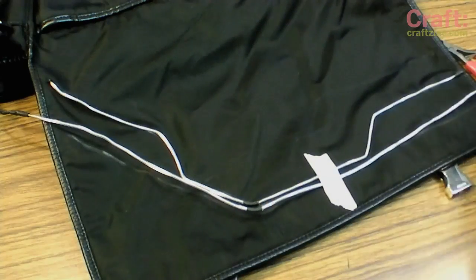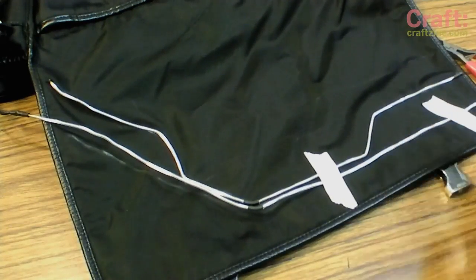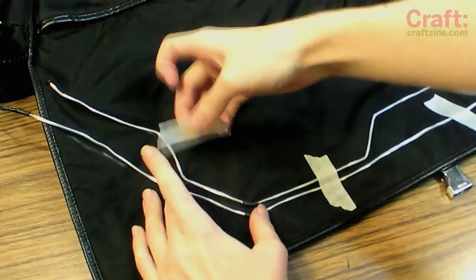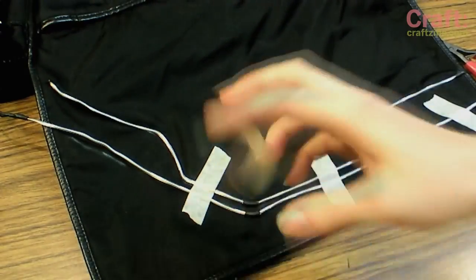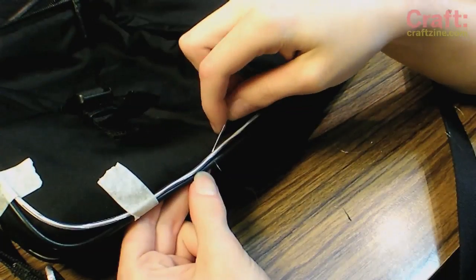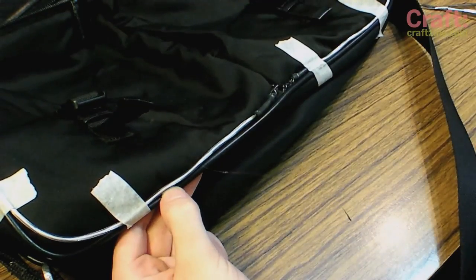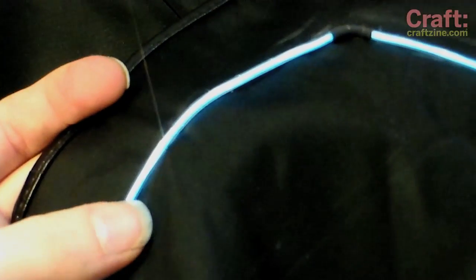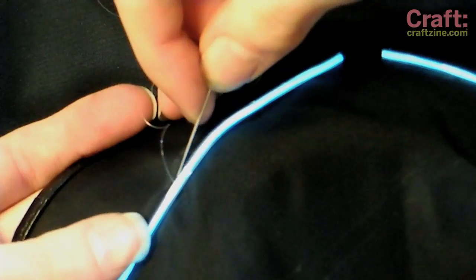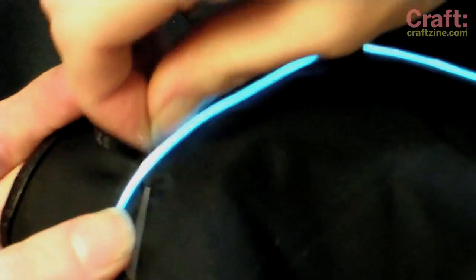Lay out your strands of EL wire along the chalk lines of your design. We find that masking tape works well to anchor the strands while you stitch them in place. Use a whip stitch and your invisible thread to affix the EL wire strands to the bag. This stitch catches the fabric, then wraps around the EL wire and catches the fabric once more.